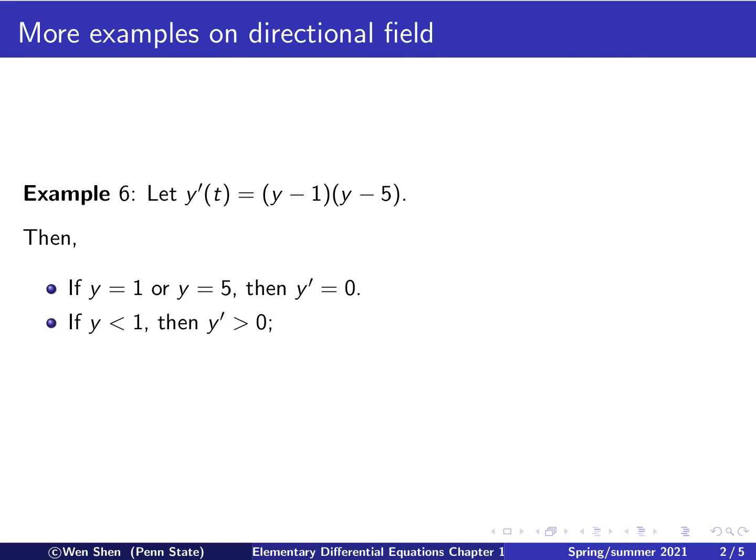Thanks to the polynomial factorized form of the right-hand side, we know that y equals 1 and y equals 5 cut the y-axis into three pieces. And on each of these intervals, the product will carry a fixed sign. So let's start for a small value. Say if y is less than 1, this term is negative, and this term is negative, and the product is positive. That's the product is y prime.